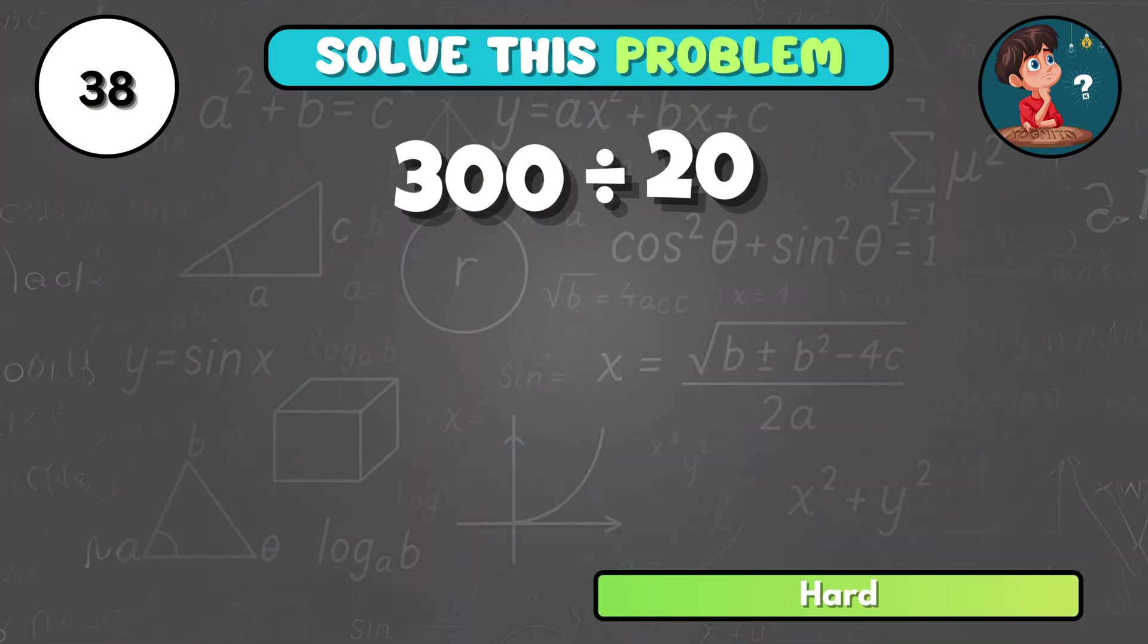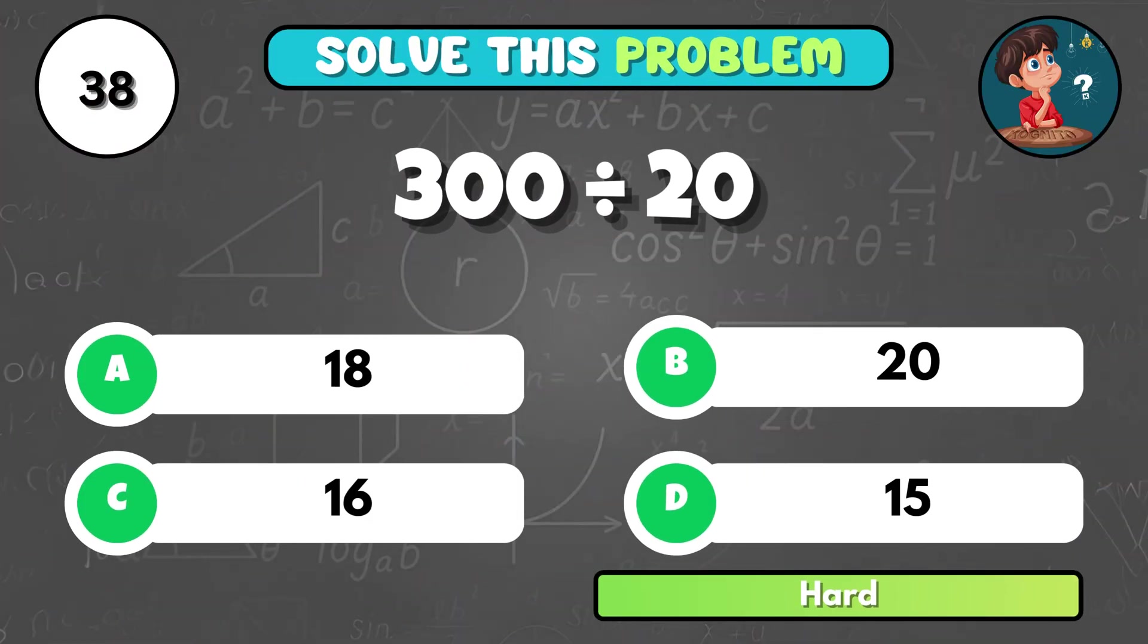What is 300 divided by 20? That's D, 15.